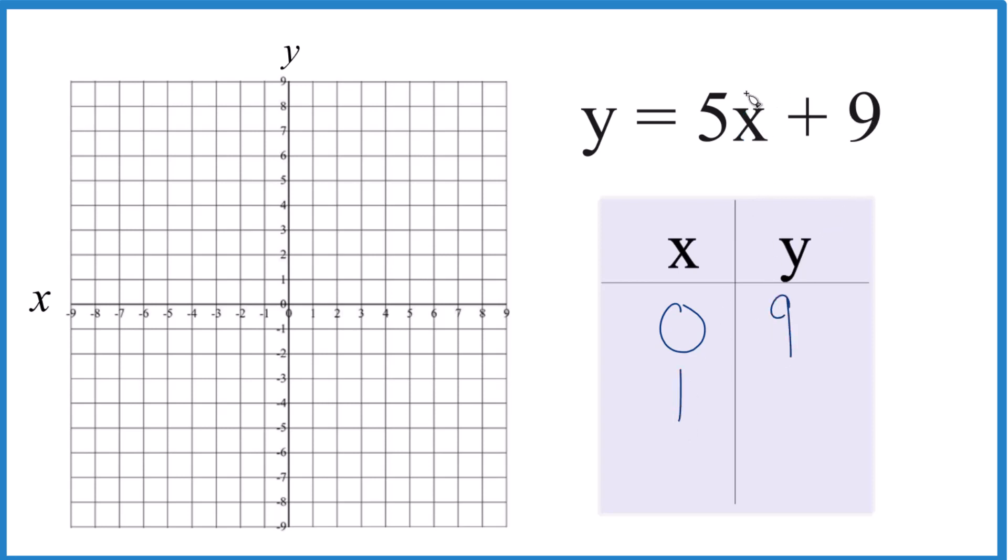We could put 1, 5 times 1 is 5, plus 9, that's 14, and my graph doesn't go to 14. So I don't want to do that. How about we do negative 1? Because then 5 times negative 1, that's negative 5, negative 5 plus 9 gives us 4.